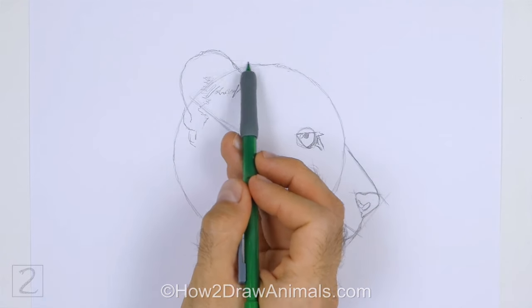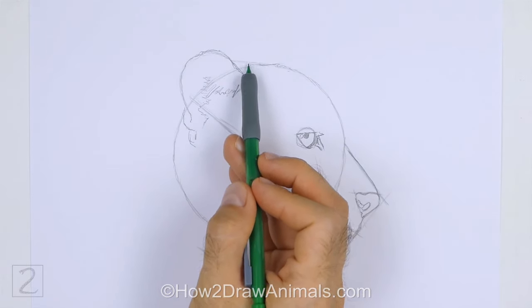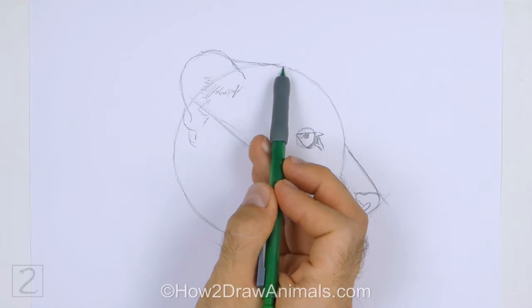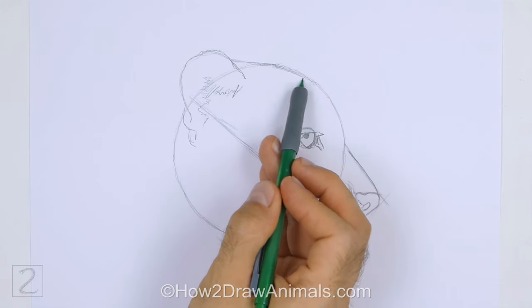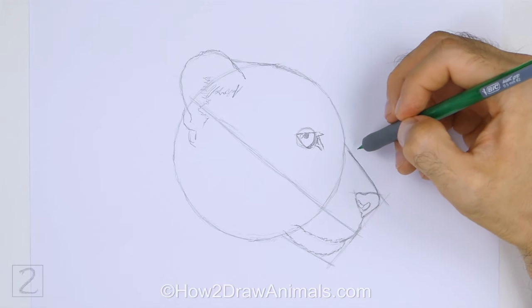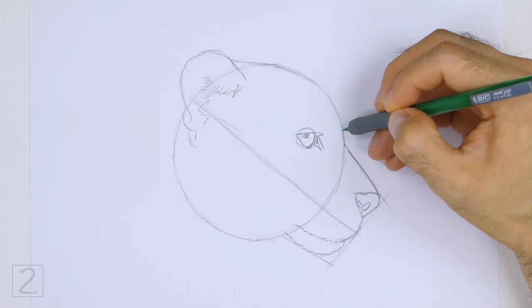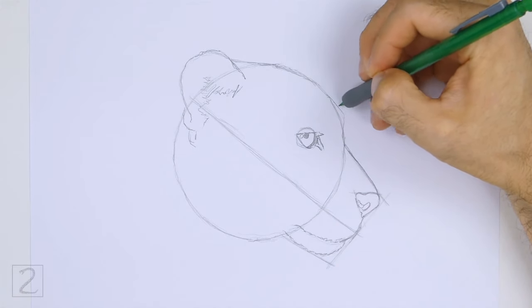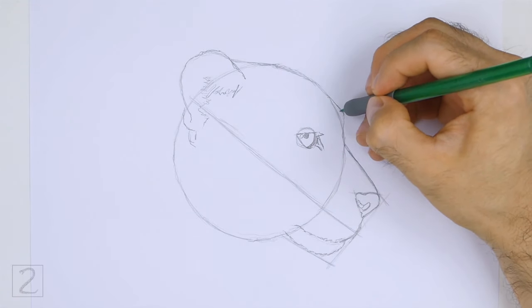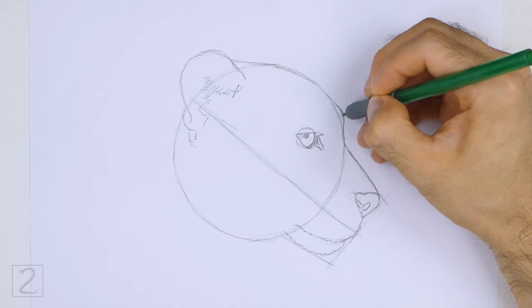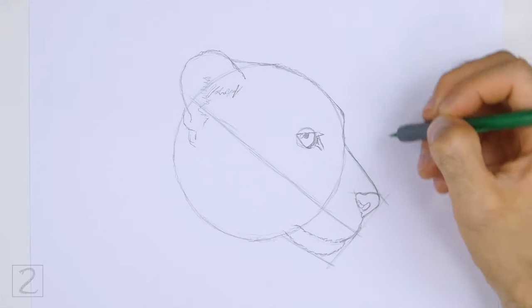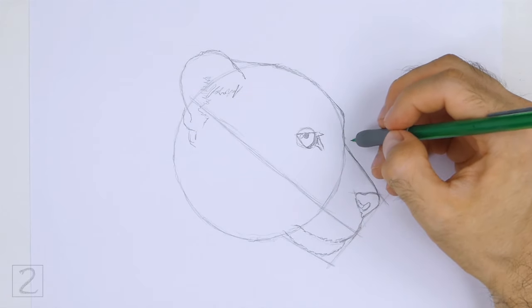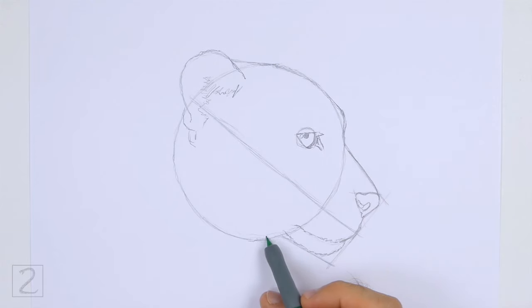Use the big circle as a guide to draw the rest of the head. Follow the basic path of the circle to create the shape of the head. Make the top of the head flatter than the initial circle. Curve the line close to the eye to create the brow. Draw a curved line along the bottom path of the circle to create the lower edge of the head.